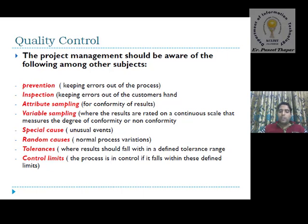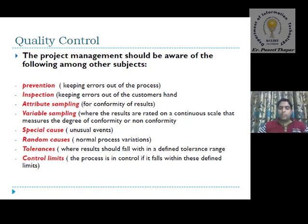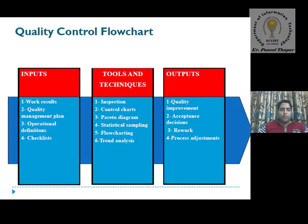Control limits define the range within which a process is controlled if it falls within those defined limits. Control limits are again a tolerance limit for quality control. This covers the basics of how the project management team controls quality.